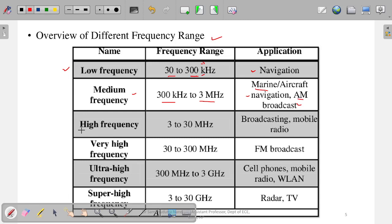After medium frequency comes high frequency, whose range is 3 to 30 megahertz. In this region, broadcasting and mobile radio are used. Note that mobile radio is not the same as mobile phones. It refers to walkie-talkies used by army personnel — it is not the cell phone.